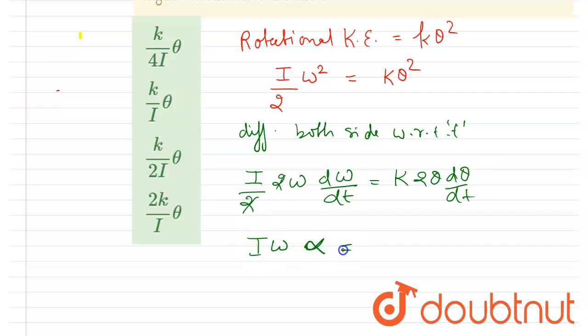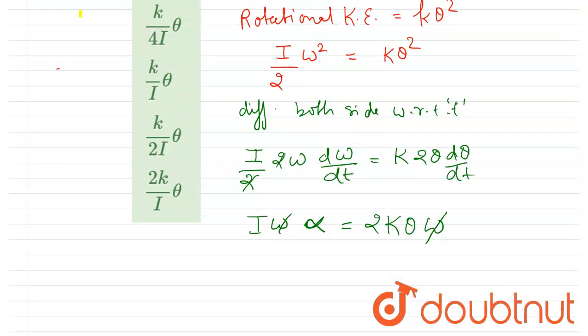So this will be alpha equals 2k theta times omega. So this omega will get cancelled out.